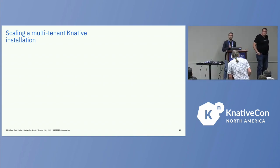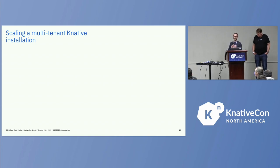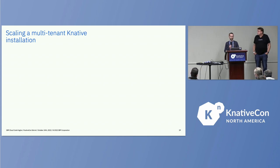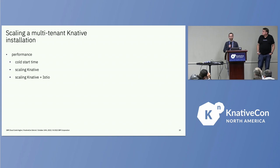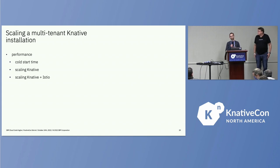After securing our tenants and isolating them from each other, the next thing is to scale up. I want to give insights on what we change in the Knative configuration to scale to the level we're at currently — multiple thousands of services per cluster. The three things I want to talk about are: cold start time (we use Istio as a service mesh which adds overhead we want to reduce), particular Knative configuration, and a special section on Knative plus Istio — what to be mindful of and how to get the cluster to a sufficient size.